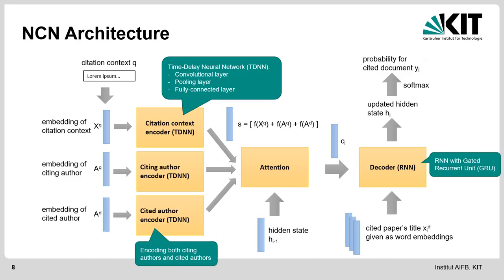Here in more detail is the Neural Citation Network architecture. We start with a citation context at the top left. We derive embeddings of this citation context, which get fed into a citation context encoder — a Time Delay Neural Network (TDNN) consisting of a convolutional layer, a pooling layer, and a fully connected layer. The citing author information and cited author information also get encoded in a citing author encoder and a cited author encoder, also TDNNs. The outputs of these encoders get concatenated into a vector S.